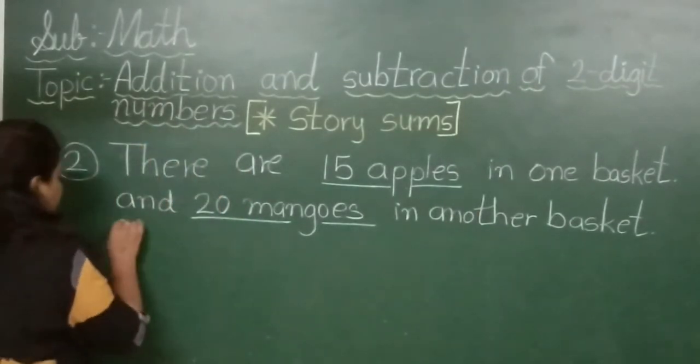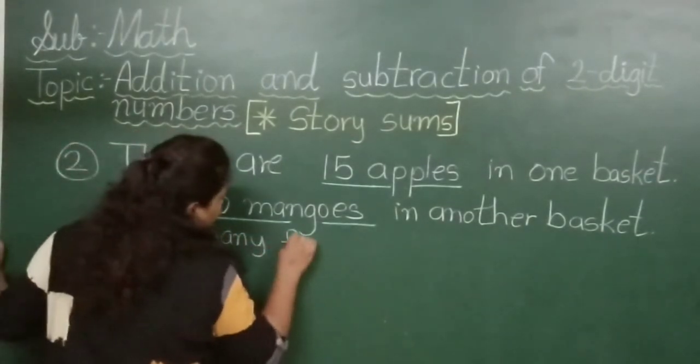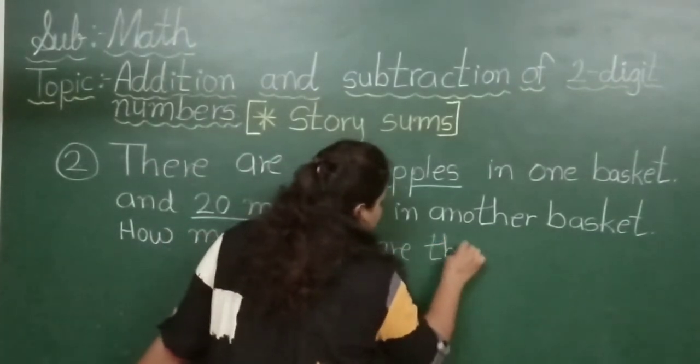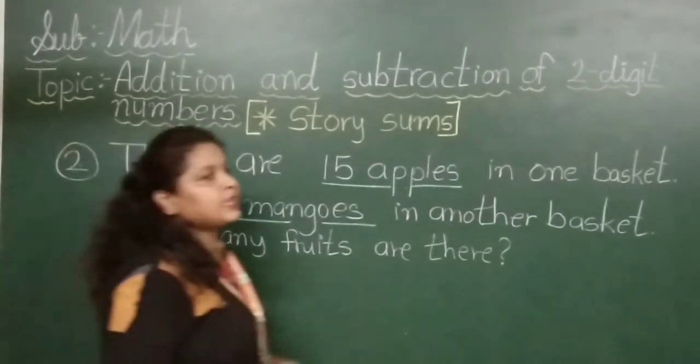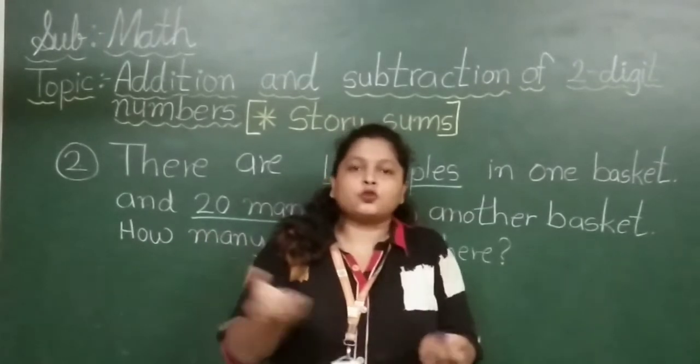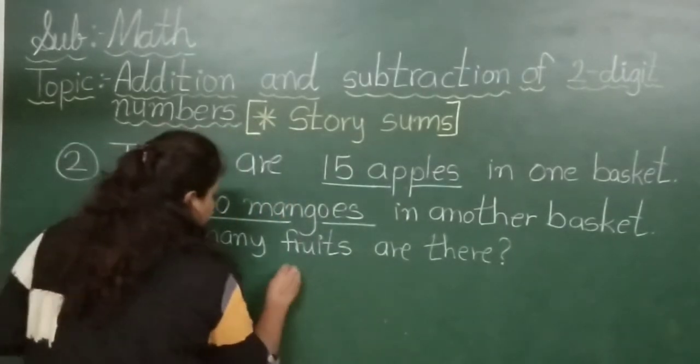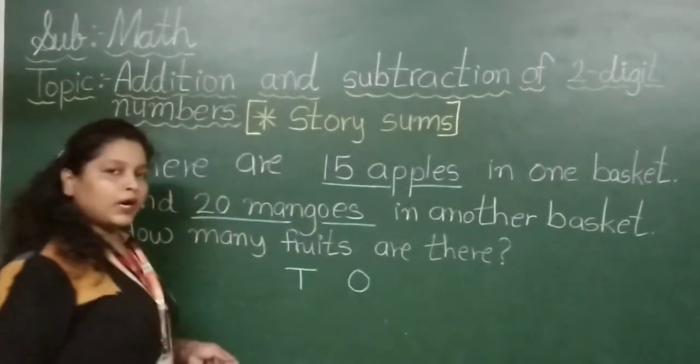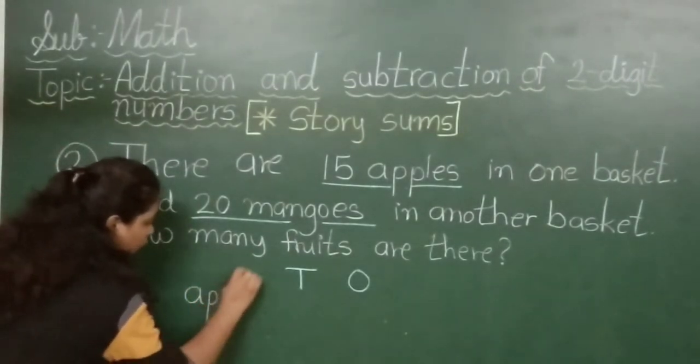Read again: There are 15 apples in one basket and 20 mangoes in another basket. So how many fruits are there? If you have these items and we add other items, to get the total, what do you do? Yes, addition. So first we will write T for tens and O for ones. First we write 15 apples.